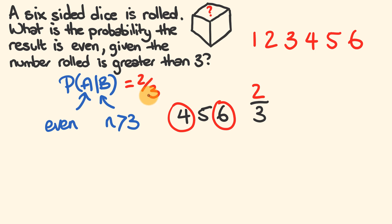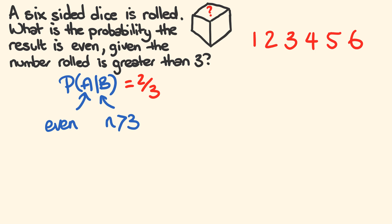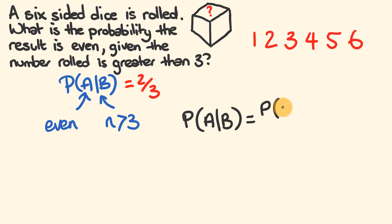Let's go through now and use a formula, because a formula is really good when the questions get a little bit more gnarly. The formula looks like this: the probability of A given B is equal to the probability of A and B occurring, over the probability of B.